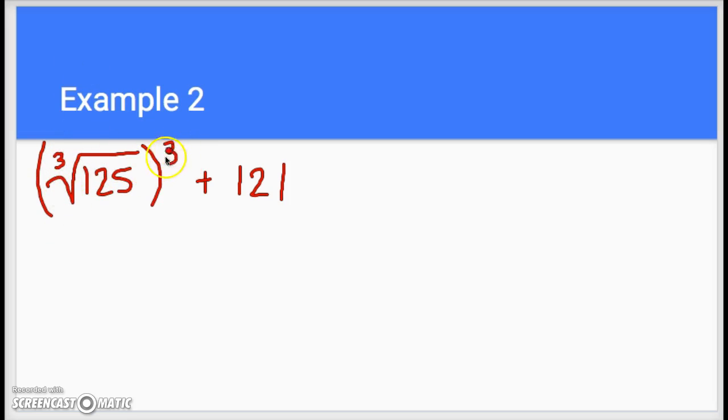We know that the cube root and cubing something are opposites. So the cube root, this whole symbol, and this cube will actually cancel each other out, and the only thing that you would be left with is the 125. And then we just simply need to add 121, so you would get 246.